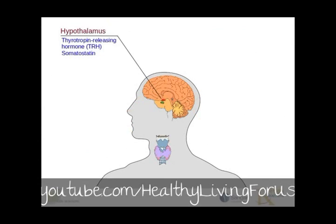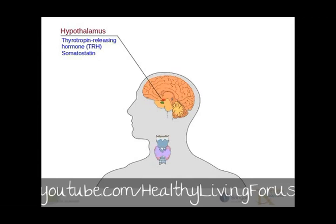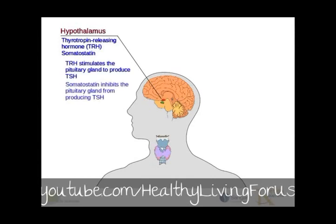Let's start with the hypothalamus. The hypothalamus detects low circulating levels of thyroid hormone, T3 and T4, and responds by releasing thyrotropin-releasing hormone, TRH. TRH stimulates the pituitary gland to produce TSH, the thyroid-stimulating hormone. Somatostatin, on the other hand, inhibits the pituitary gland from producing TSH.